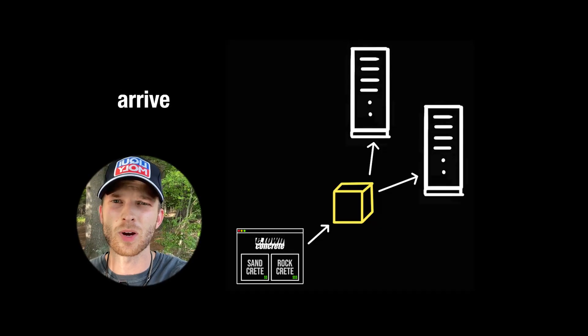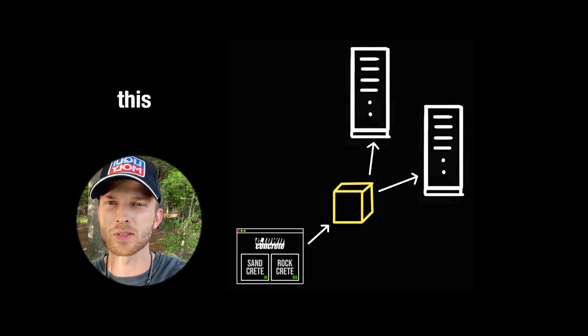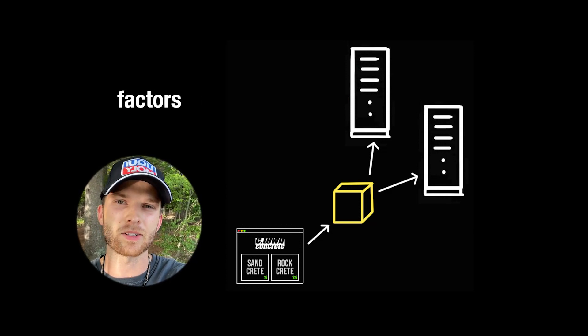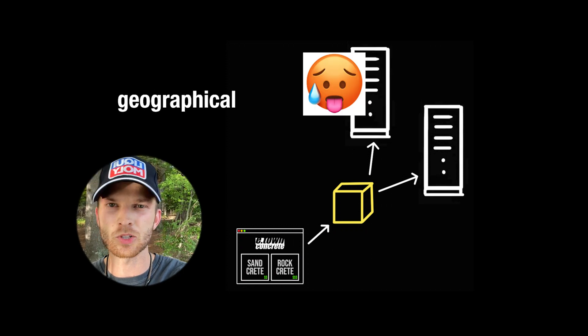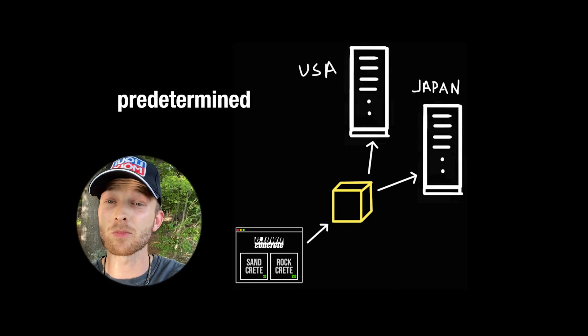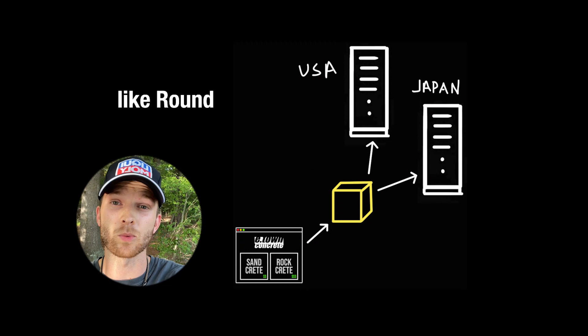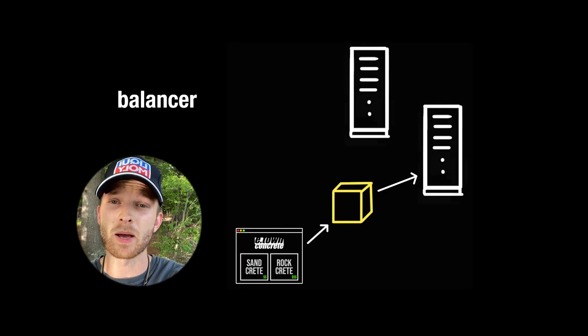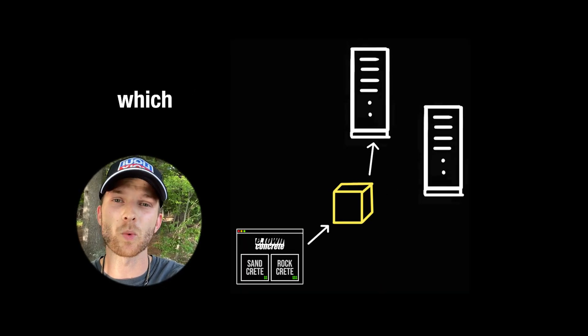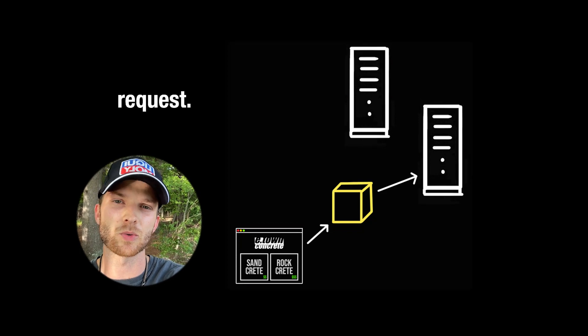So as customers arrive and click their way into the marketplace, the load balancer performs this sort of dance where it analyzes factors like server health, current server load, the geographical location of the customer, or even predetermined algorithms like round robin or least connections. Based on this information, the load balancer can make an informed decision on which server should handle the customer's request.